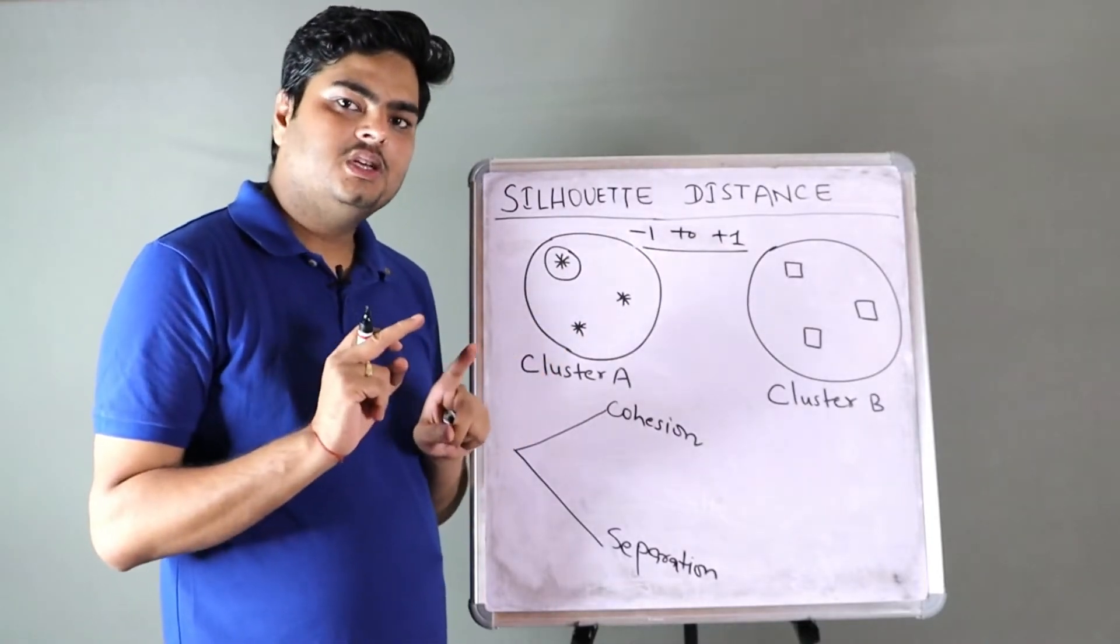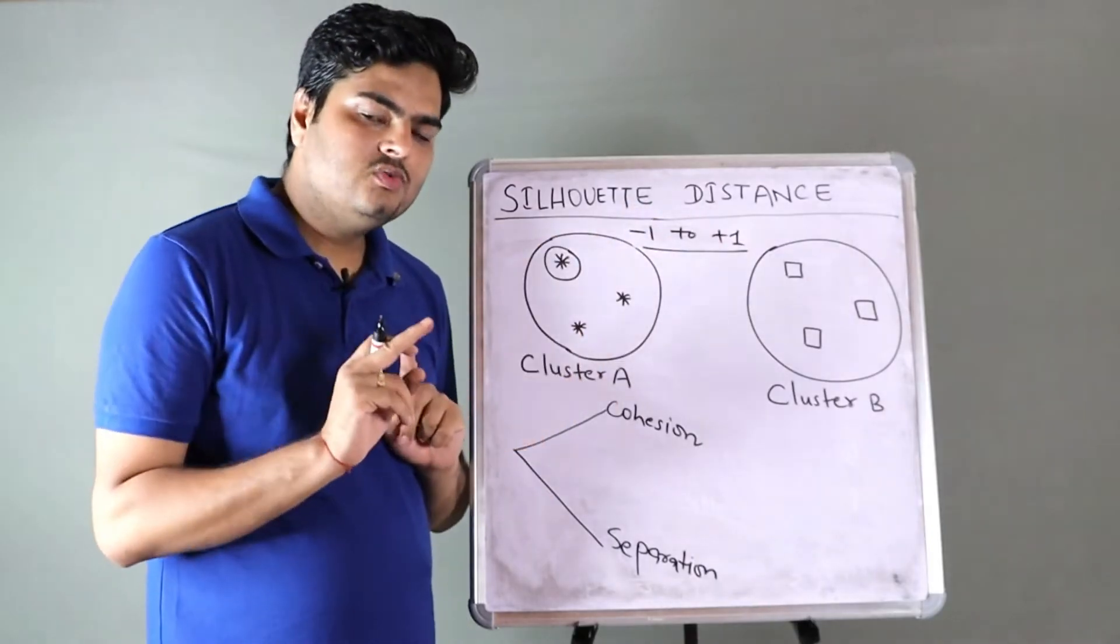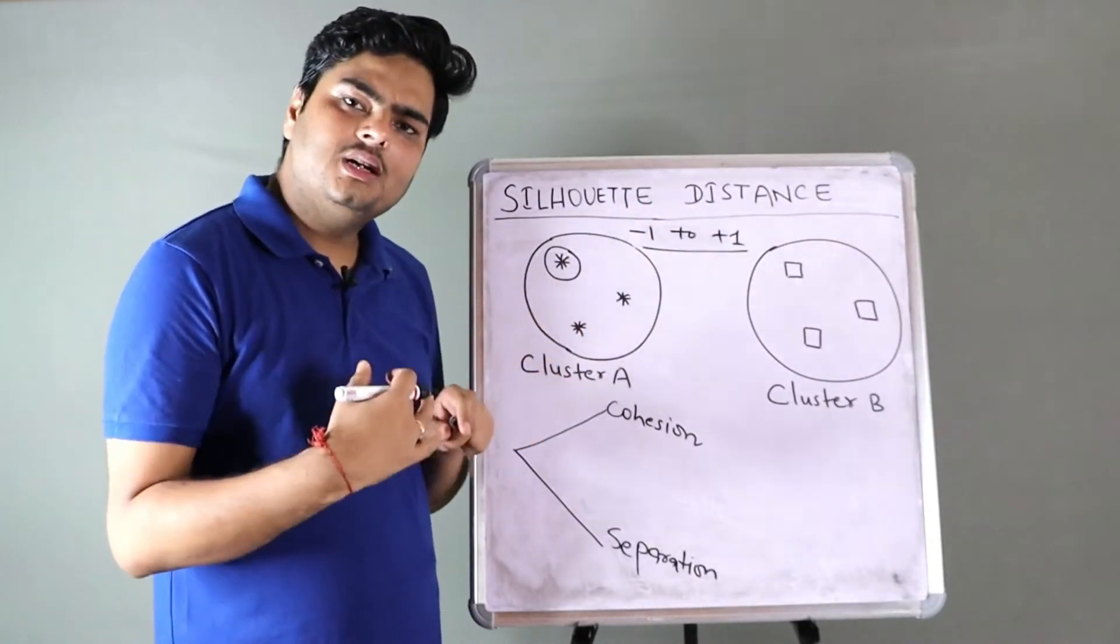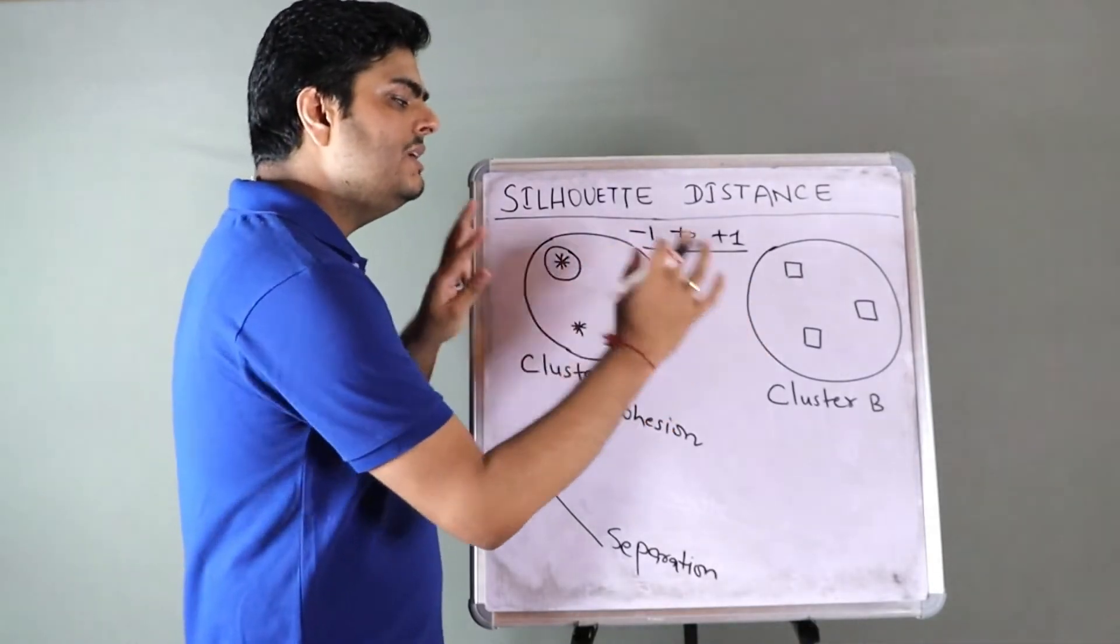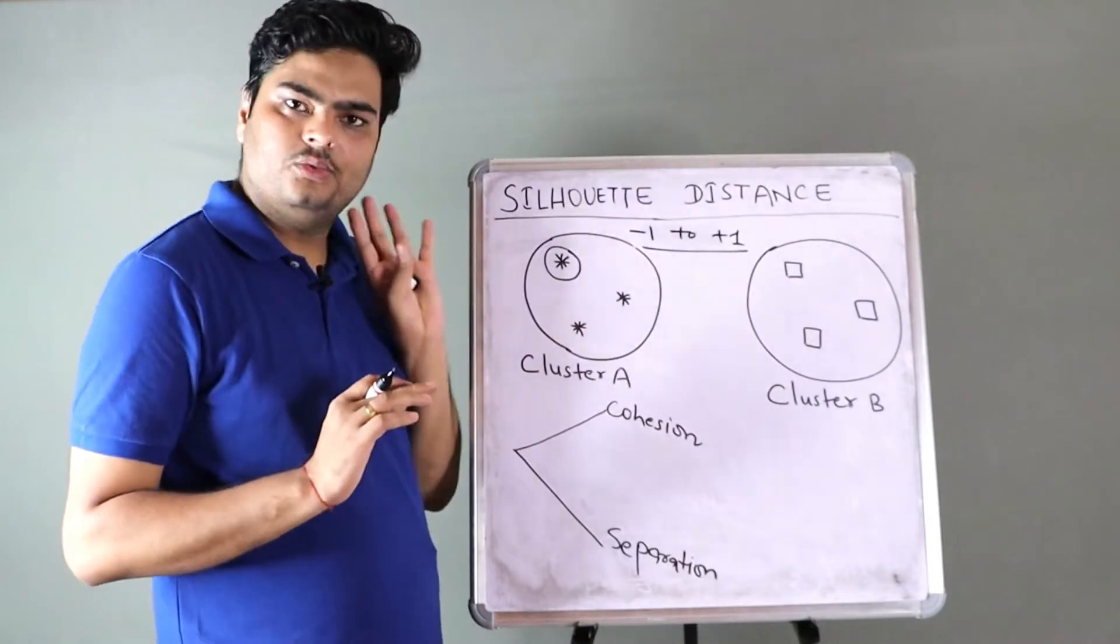There are two numbers associated to measure these two. To understand it very simply, we will take only one data point. Let's say there are two clusters, cluster A and cluster B. For example, let us take this data point. There are two variables defined to compute the silhouette coefficient for this data point.